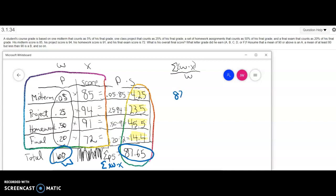So we have 87.65 divided by your weight. There's just one total weight. And you get 87.65. Now the problem asks you to round to one decimal place, so that's 87.7 and that's a B.